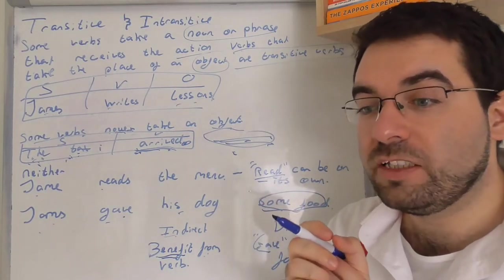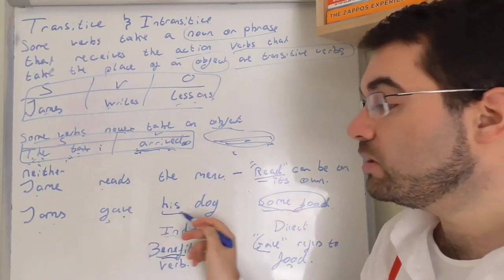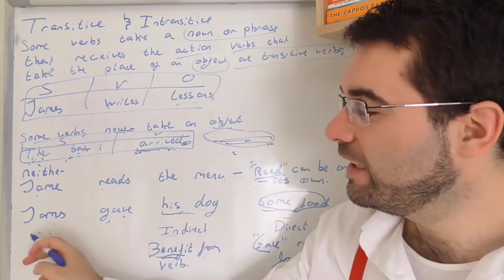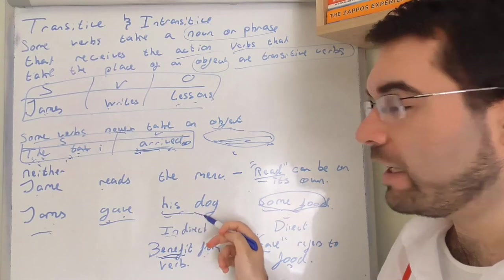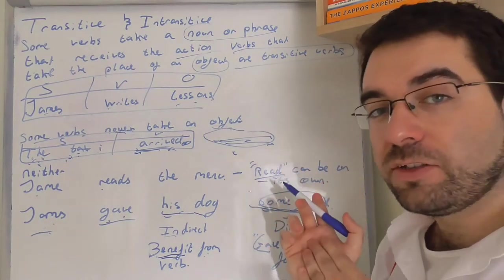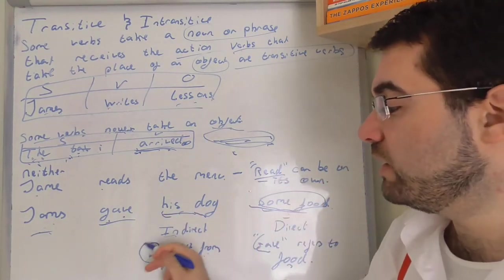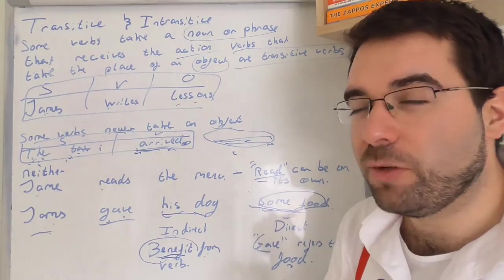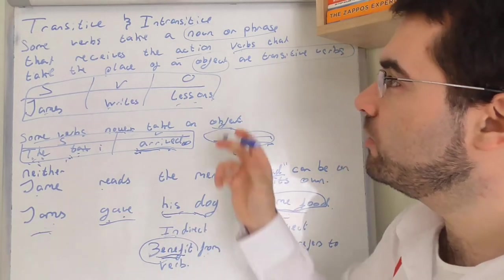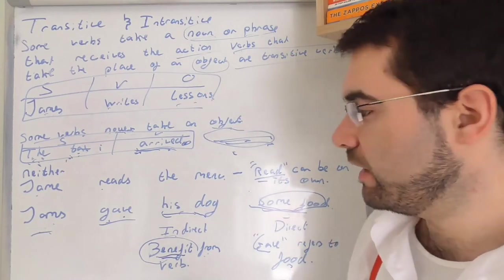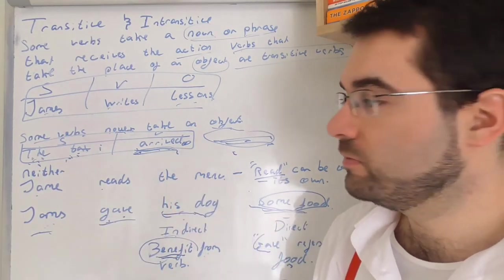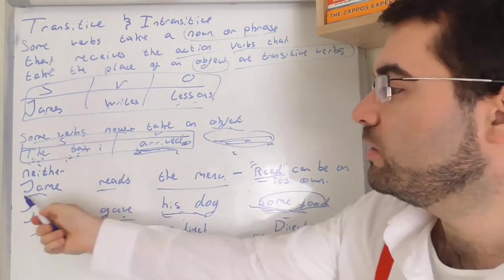And indirect, which is the dog. His dog, he benefits from it. So James gave his dog some food. James gave, James gives a lot, I guess. James gives the cat some food. Some food is the object. The verb is being applied to it. And his cat is benefiting. He's eating something from the verb. He's benefiting from it. Yeah, cool.